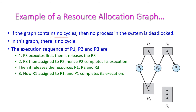If there is no cycle in a graph, then there is no deadlock in the system. As per our example, there is no cycle in our graph, hence there will be no deadlock. Let us see the execution sequence of all the processes P1, P2, and P3. P3 will get executed first because P3 does not wait for any other resource — it already holds R3, so there is no need to wait. First, P3 executes and then releases R3.